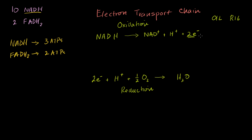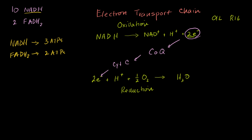These electrons that are coming out of NADH are in a very high energy state. Over the course of the electron transport chain, these electrons get transported to a series of transition molecules — one is coenzyme Q, and another is cytochrome C. As the electrons go from one to the other, they go into slightly lower energy states. They eventually end up being used to reduce oxygen into water. Every time an electron goes from a higher energy state to a lower energy state along this chain, it's releasing energy.